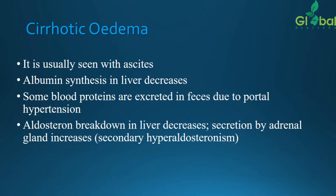Cirrhotic edema is usually seen with ascites — fluid accumulation in the abdominal region or abdominal cavities. Albumin synthesis in the liver decreases; whenever albumin production decreases in the liver, cirrhotic edema forms. Some blood proteins are excreted in phases due to portal hypertension. Additionally, aldosterone breakdown in the liver decreases while secretion by the adrenal gland increases — this is again secondary hyperaldosteronism.